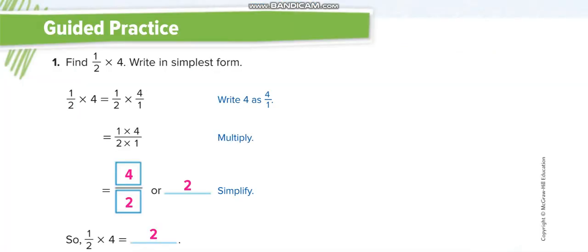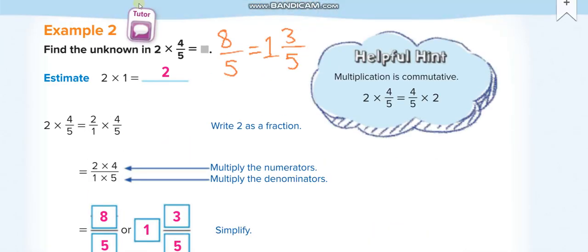Similar to here, you just multiply the whole number with the numerator and keep the denominator the same. Or you can write your whole number as 2 over 1, and then multiply the numerator with the numerator and denominator with the denominator. So if you multiply your whole number with the numerator, 2 times 4 is 8 over 5.